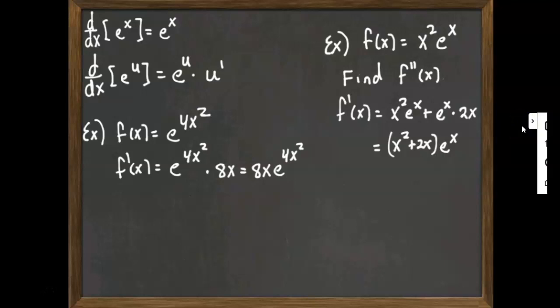So we go ahead and do that, x squared plus 2x times e to the x. So by the product rule, second derivative would be that stuff times e to the x plus e to the x times the derivative of that stuff, which would be 2x plus 2. And then we just go through and we simplify.